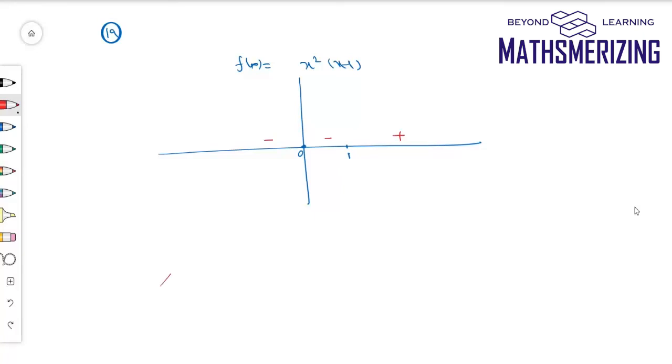The rightmost is plus and then minus, and there will be no sign change at 0. So this graph will start from minus infinity. It has a double root at 0, so it will touch the x-axis at 0, and then it will pass through 1 and then it will go up to plus infinity.